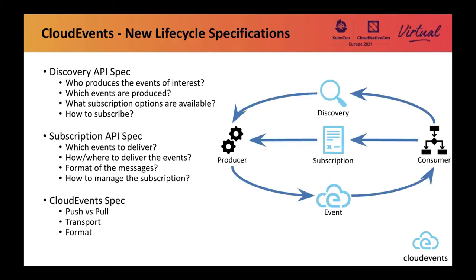But we're not just twiddling our fingers — we're actually looking at the next set of pain points. We're going to start looking at what we call the life cycle of event delivery from beginning to end. Cloud events helps you deliver the event from the producer to the consumer itself. But in order for that to actually get started, the consumer first has to discover what event producers are out there and what events they actually produce.